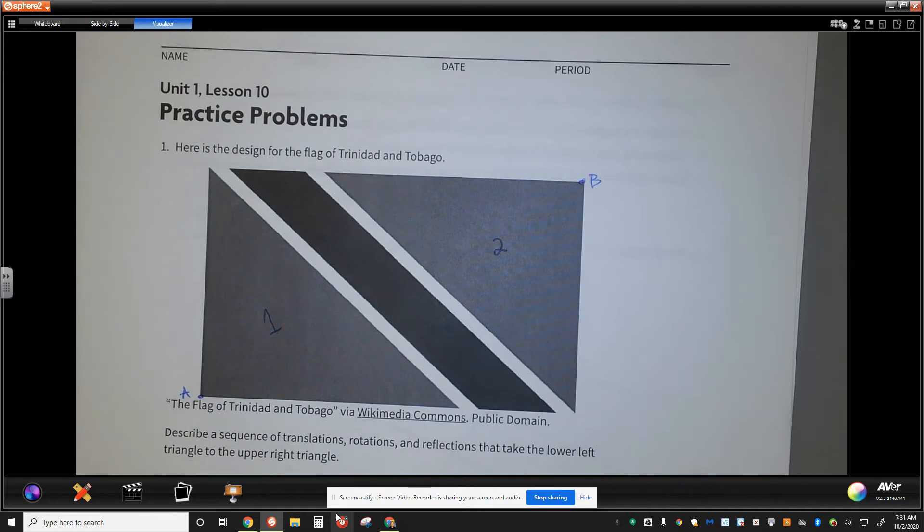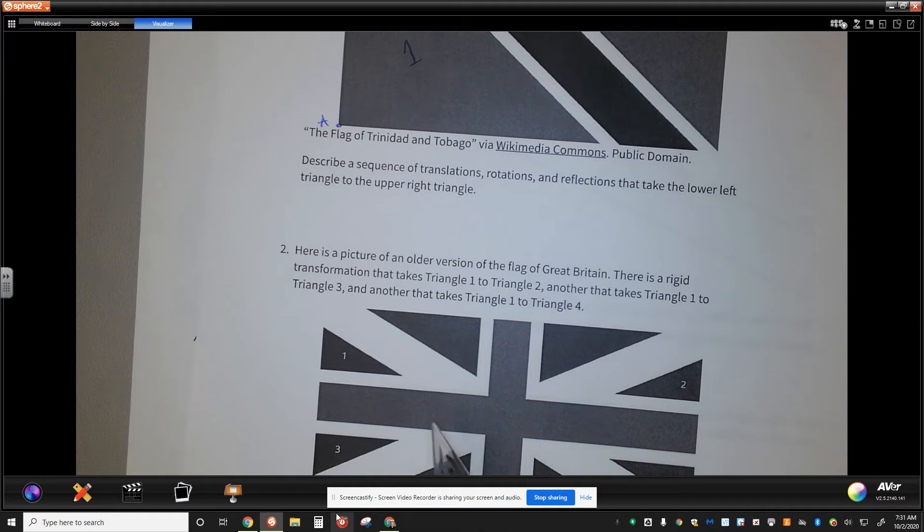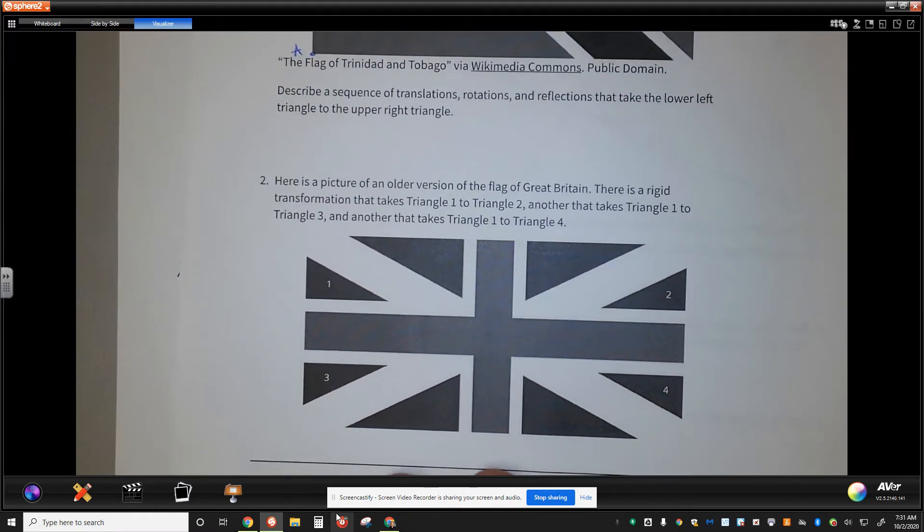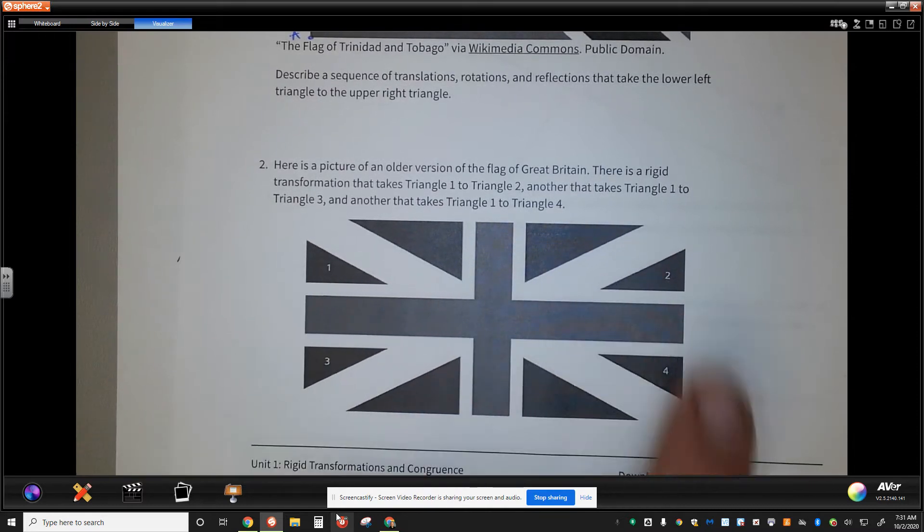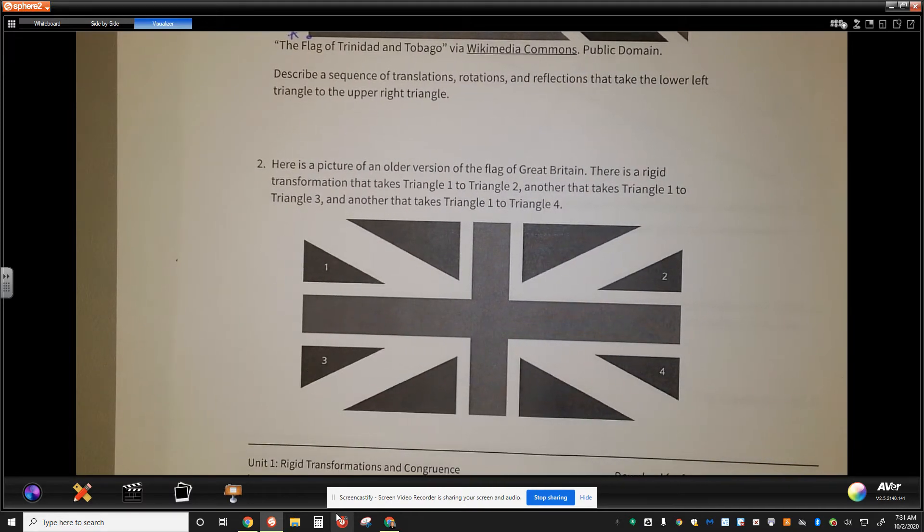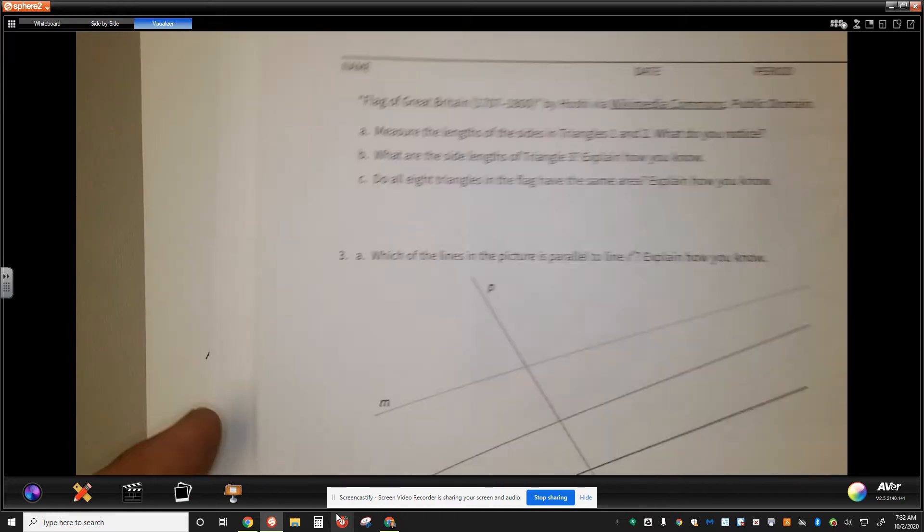Pretty simple, yeah? Perhaps you have another way to do it. I will tell you that you can explore options of reflection. You can explore other options. Play with those and see what happens. Number 2 is a picture of an older version of the flag of Great Britain. There is a rigid transformation that takes triangle 1 to triangle 2, another that takes triangle 1 to triangle 3, and another that takes triangle 1 to triangle 4.